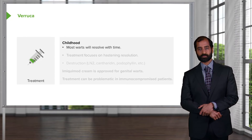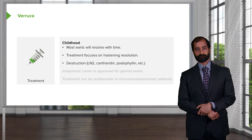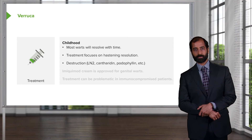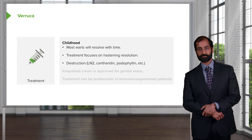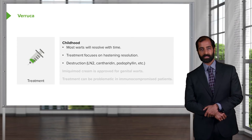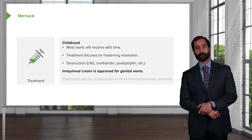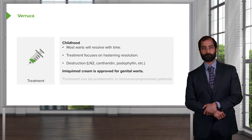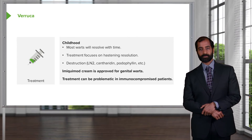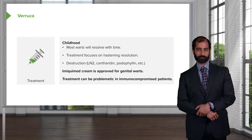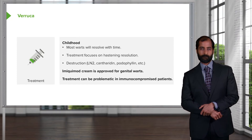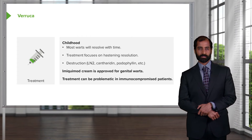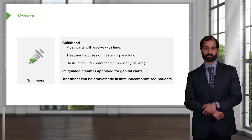Verruca in children: most warts will resolve with time, so treatment is focused on hastening resolution. Areas of concern include adherent areas such as the subungual region. Treatment options include cantharidin and liquid nitrogen (LN2) for destruction. The drug you want to know is imiquimod cream, approved for genital warts. Treatment can be problematic in immunocompromised patients. Keep in mind for microbiology that vaccinations are now available to combat HPV — referring to Gardasil.